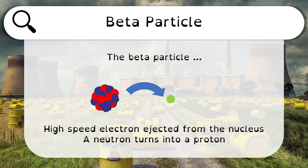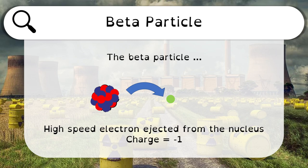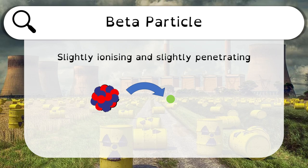A beta particle is a high-speed electron ejected from the nucleus — from a previous video, it's when a neutron turns into a proton. A beta particle is just the electron, so its charge is negative one. Comparing that to an alpha particle's charge of plus two, this one's only minus one.